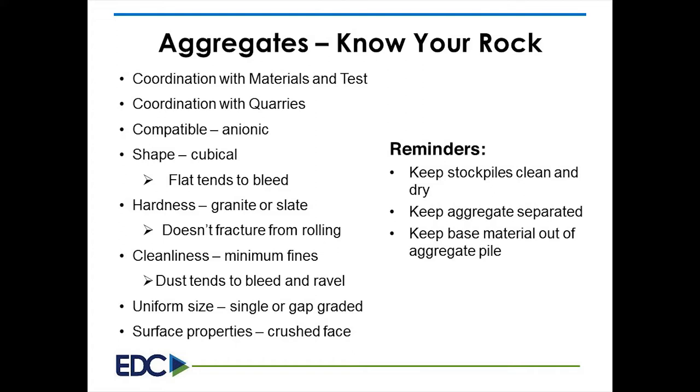Consider aggregate shape—flat tends to bleed. For hardness, we use granite or slate; limestone will work but watch your roller weight as it can crush it—use a lighter steel wheel or rubber tire. Cleanliness is critical: minimum fines, as dust tends to bleed and ravel, and uniform size. Keep stockpiles clean, dry, and separated. Don't use aggregate all the way down to the base material of the stockpile.